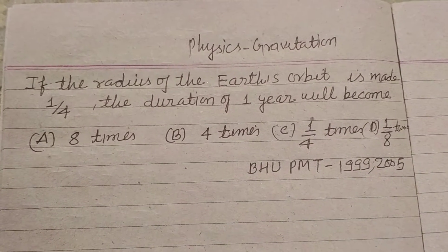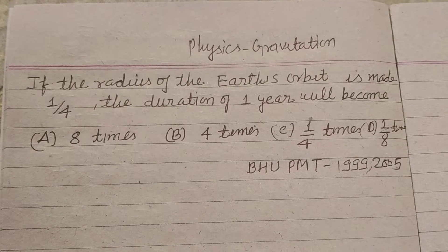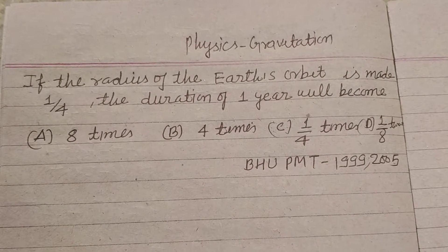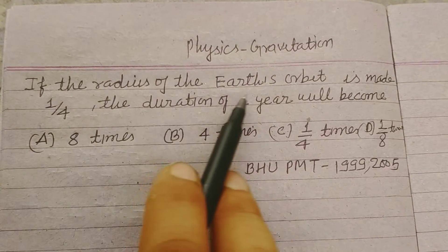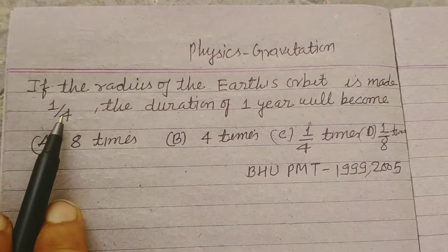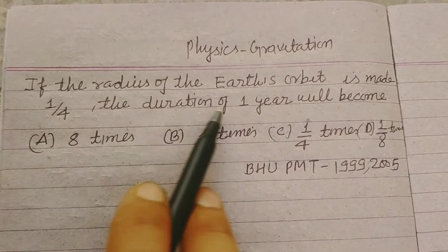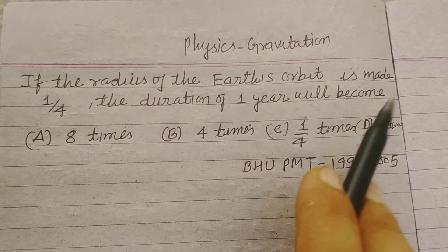Question is based on gravitation or on the law of universal gravitation. The question is saying if the radius of the earth's orbit is made 1/4, the duration of 1 year will become what?